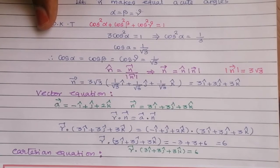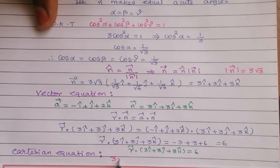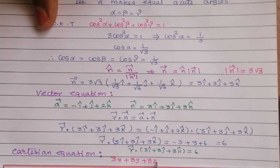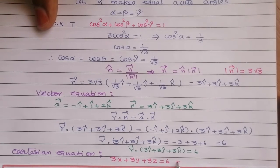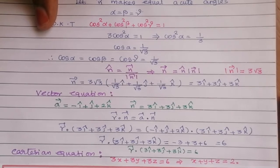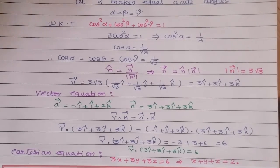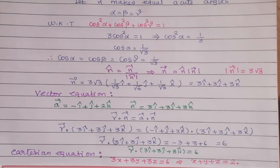The vector equation gives us the Cartesian equation: 3x + 3y + 3z = 6, or dividing by 3, x + y + z = 2. This is the Cartesian equation of the plane.